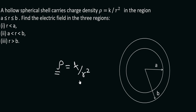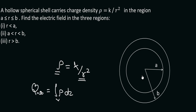Since rho is dependent on radius, to find the net charge we will have to integrate rho over the entire region. We are asked to find the electric field in three regions: first, when the radius is less than A; second, when the radius is between A and B; and third, when the radius is bigger than B.